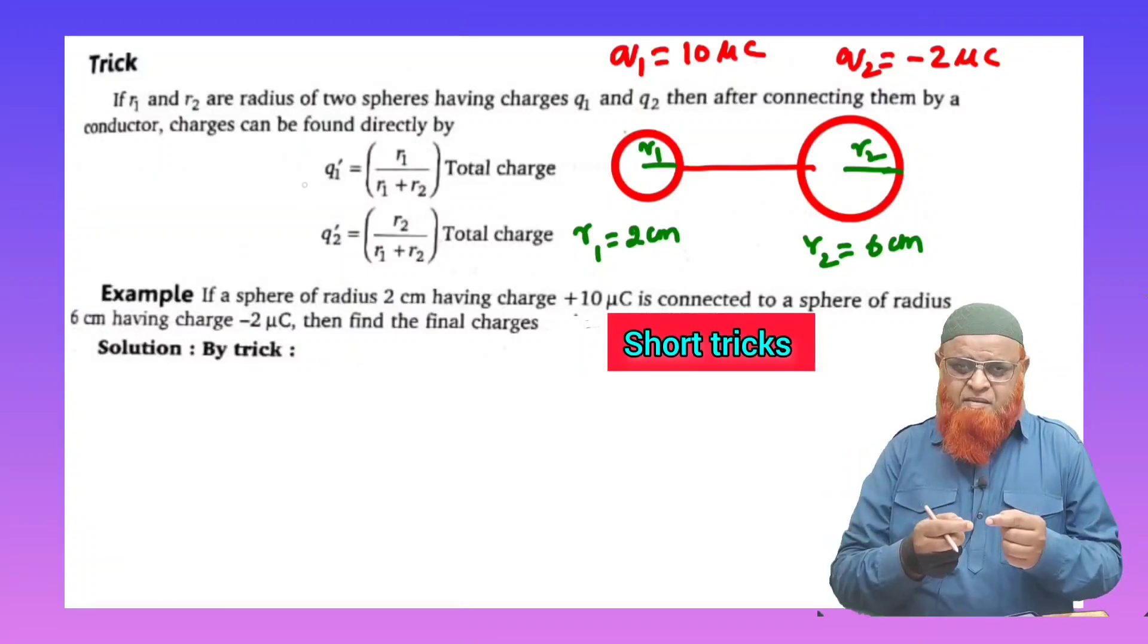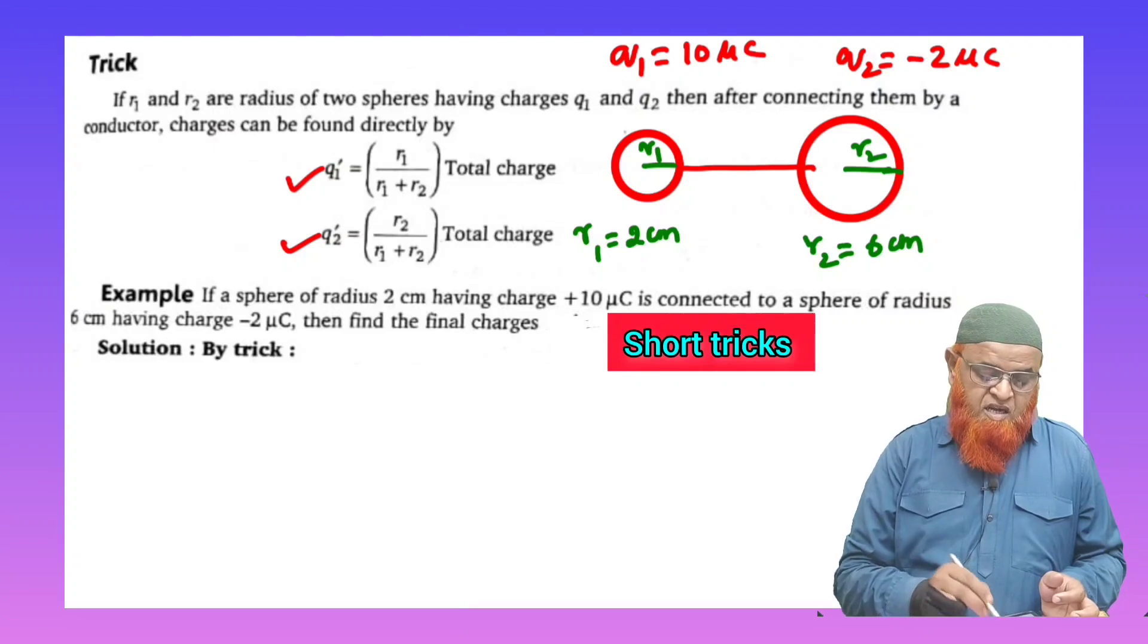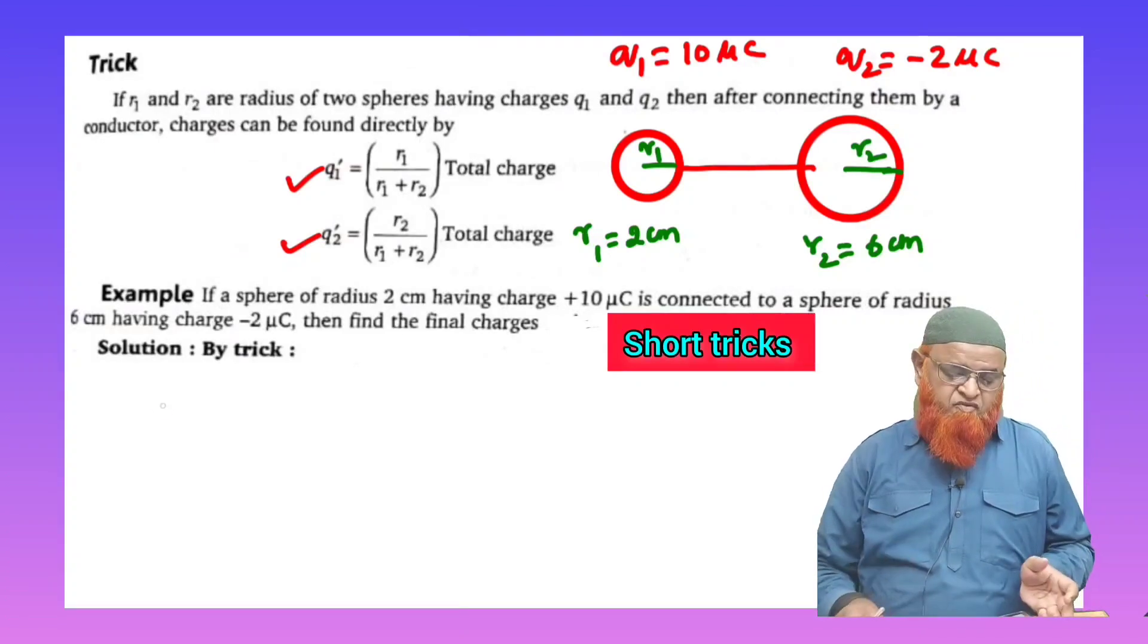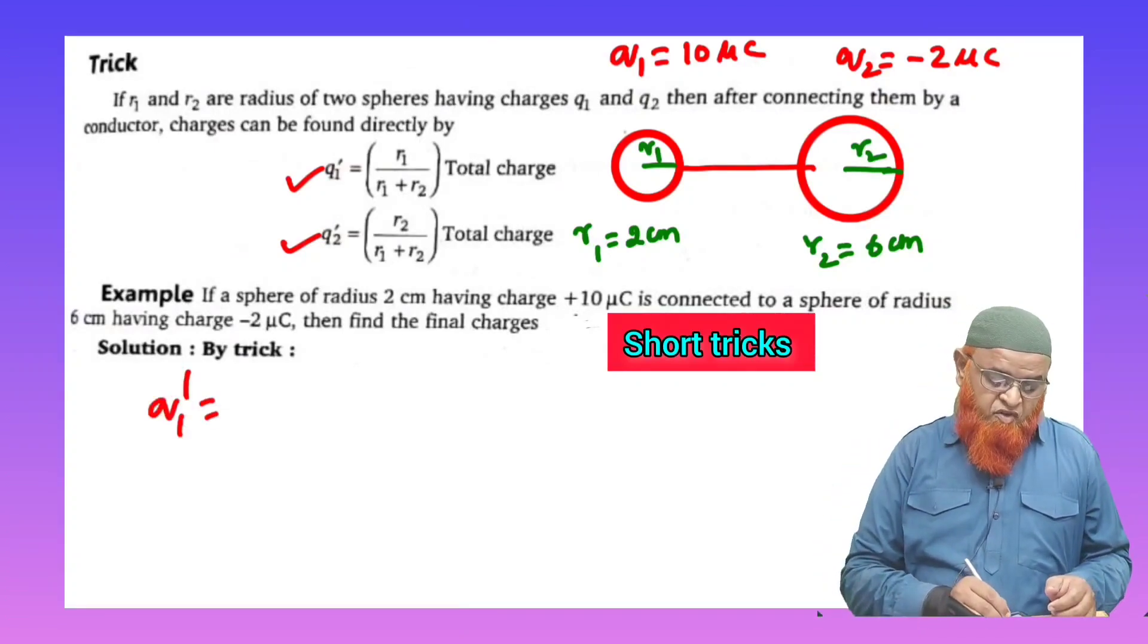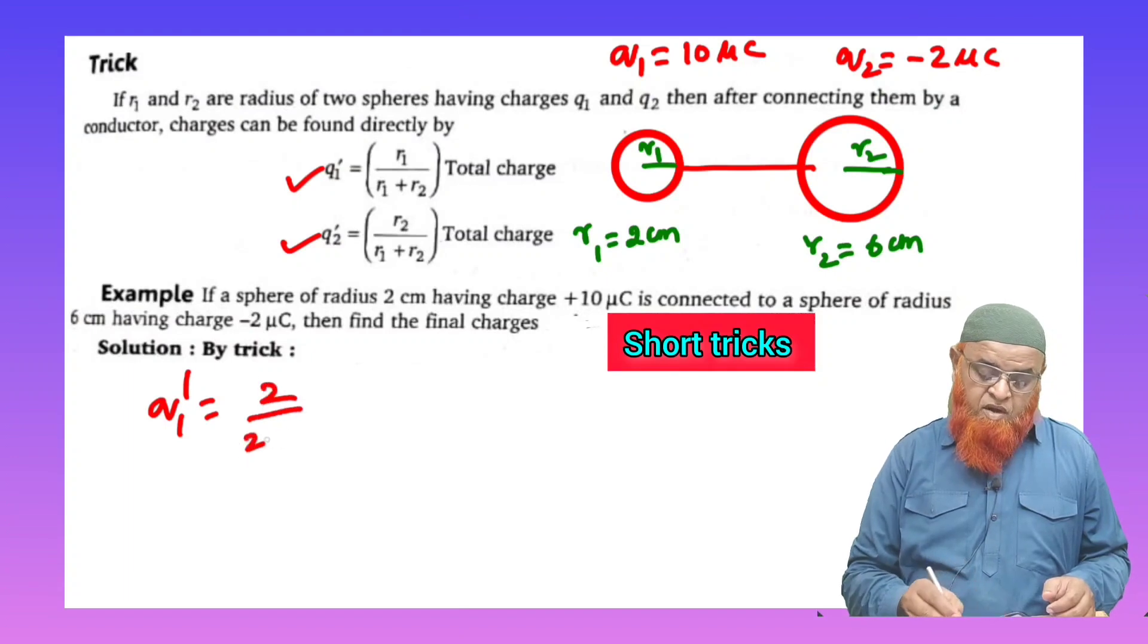But in what way the charge gets distributed finally when you connect the two spheres with a certain wire? For that the shortcut formula is q1, q2. So here you can see the shortcut formula q1 dash is equal to r1, r1 is 2.